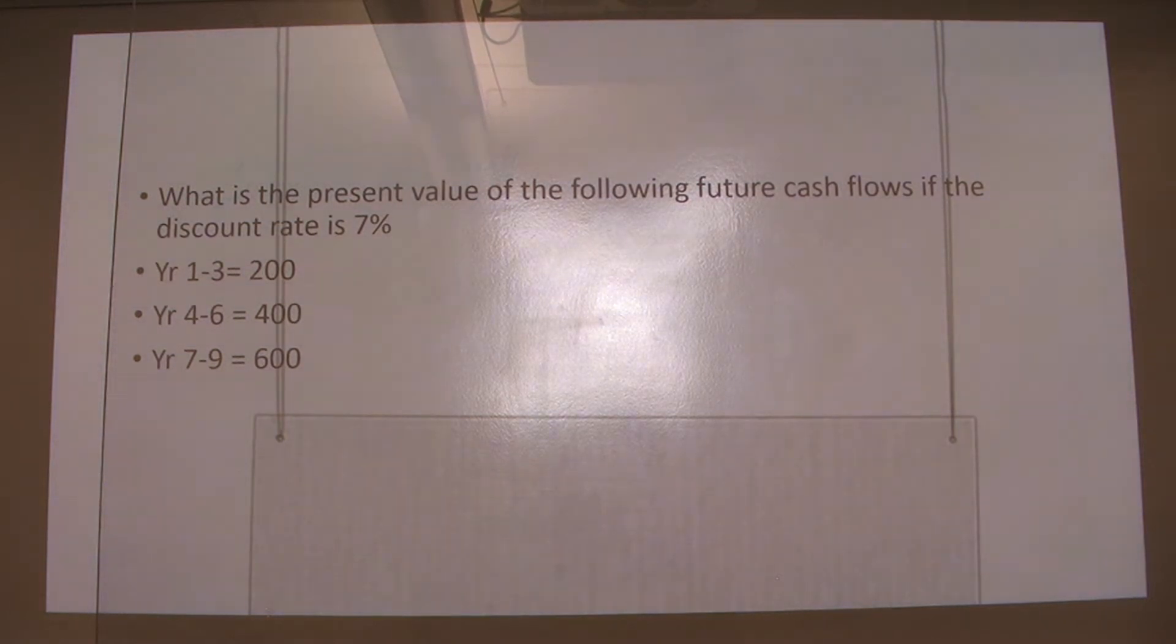All right, now we're going to do a question with multiple cash flows in different frequencies. So we just changed it up a little bit. And so here we have, what is the present value of the following future cash flows if the discount rate is 7%?